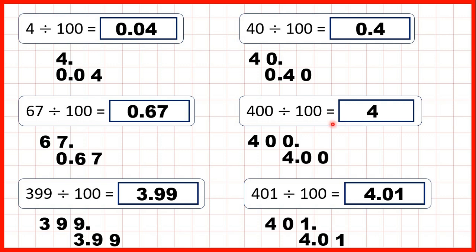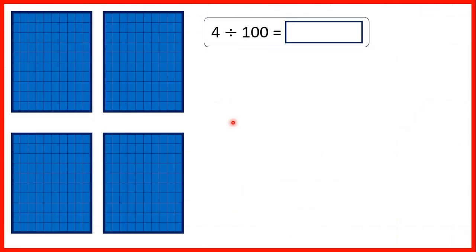Notice: 400 divided by a hundred was exactly 4. Three hundred and ninety-nine is just a little bit less than 400, so our answer was just a little bit less than 4. And 401 is just a little bit more than 400, so our answer was just a little bit more than 4.